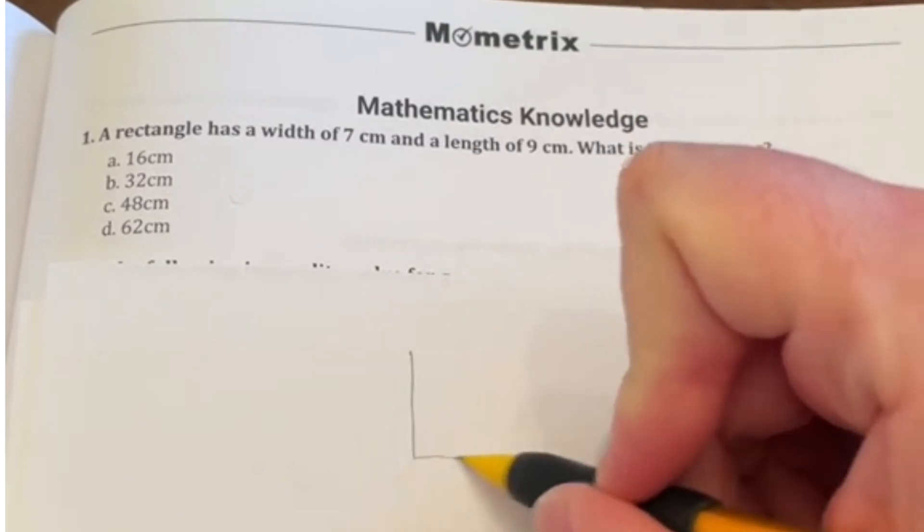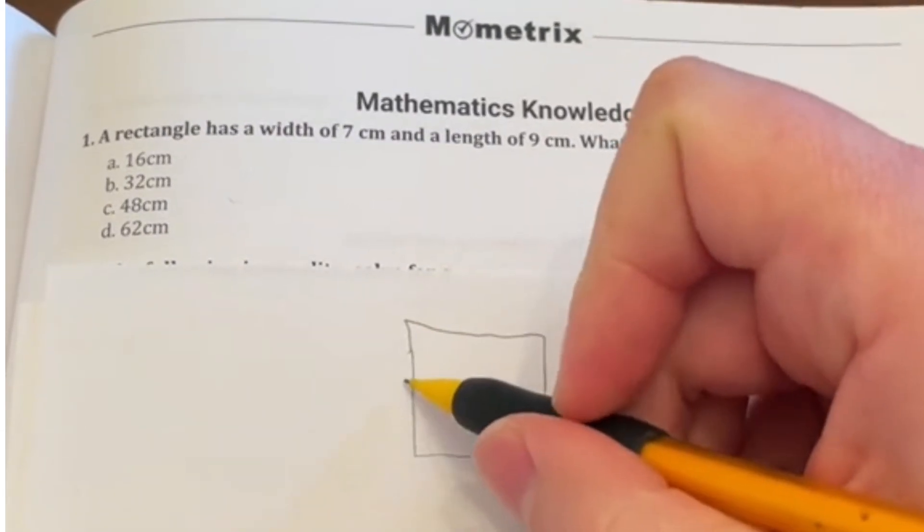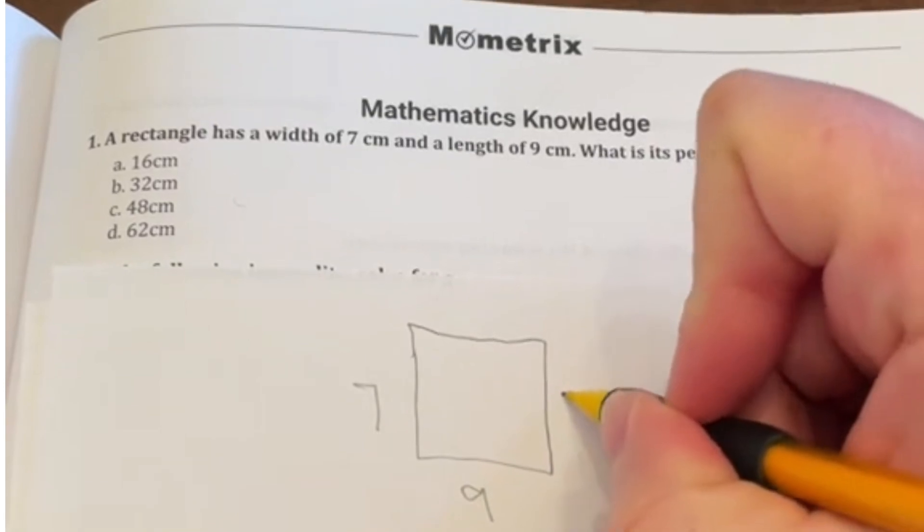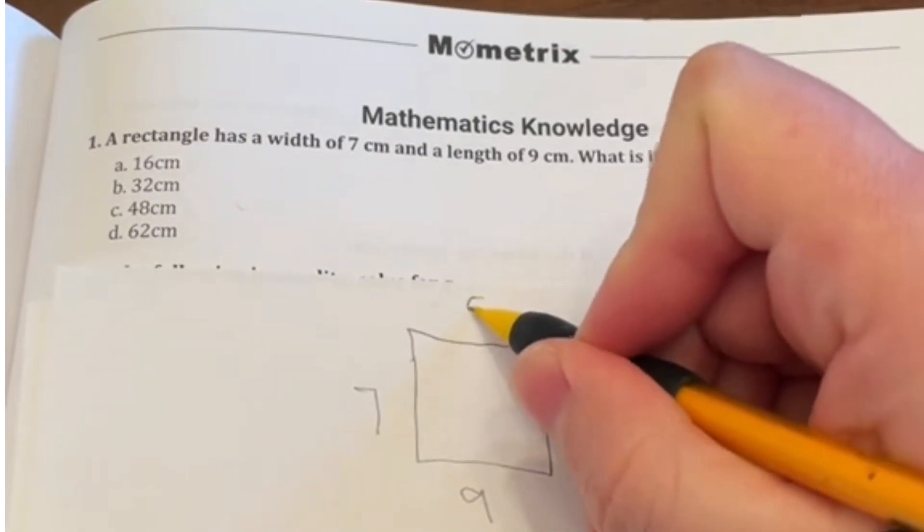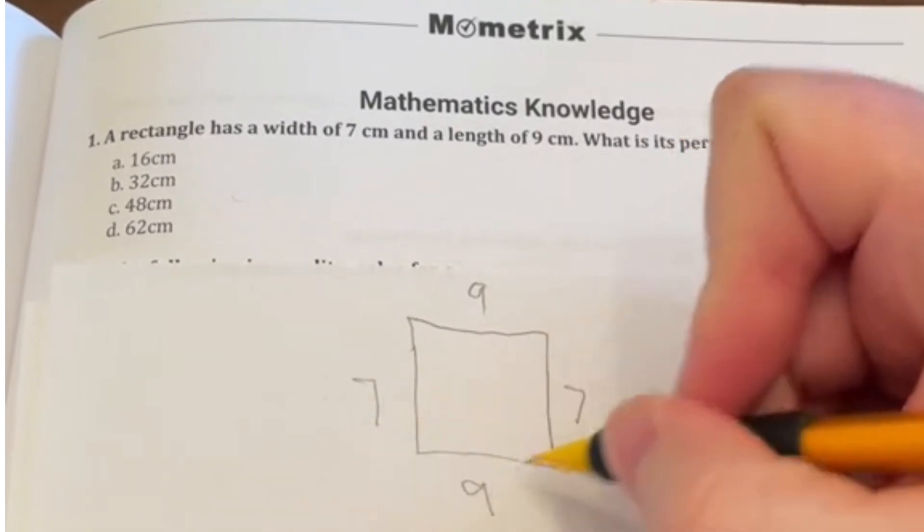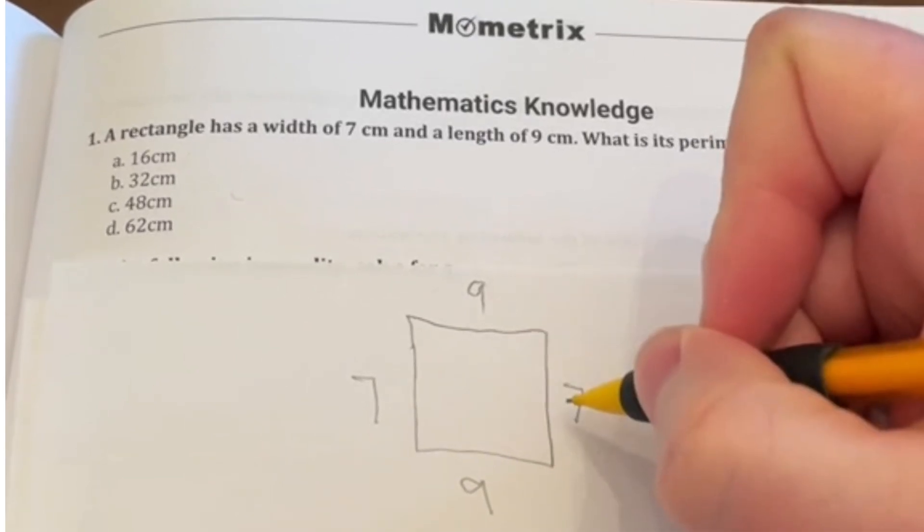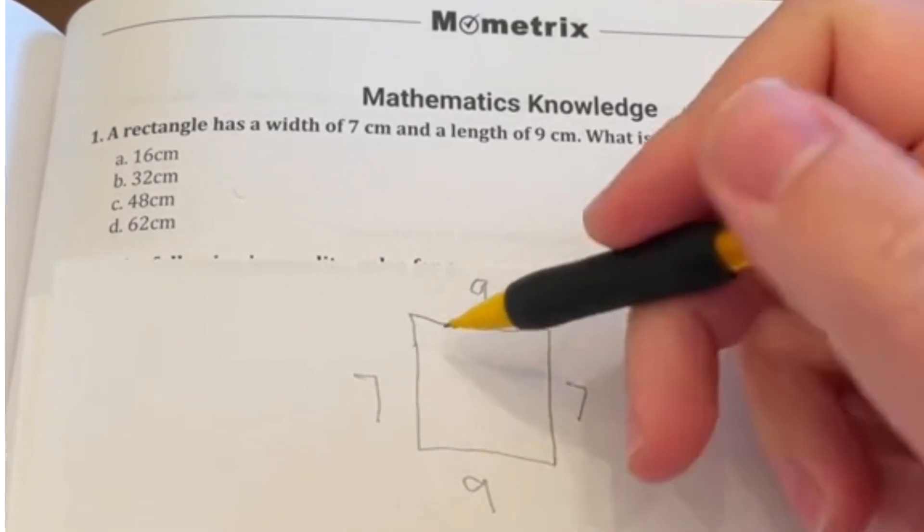So in this case, remember what's perimeter? Perimeter is the length all the way around the item. So we're looking at 7 by 9. And remember, that means that this side is 7 and this side up here is 9. So if I want to find the full answer here, we have to add all four of these together. It's often forgotten that we have two other sides.